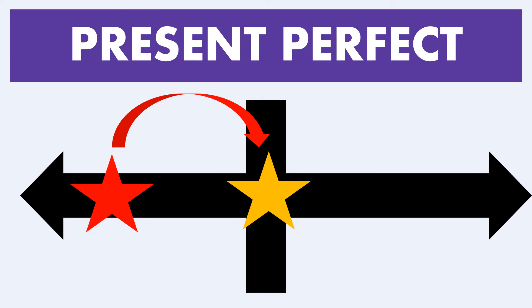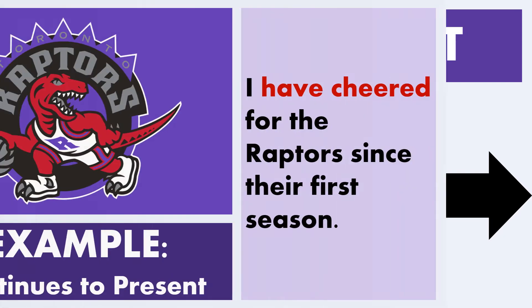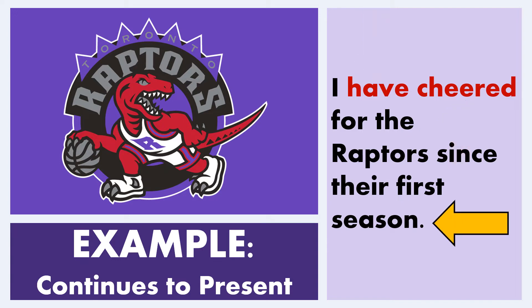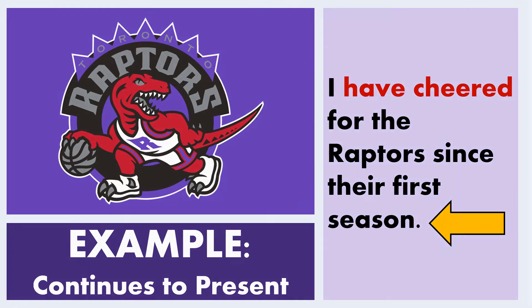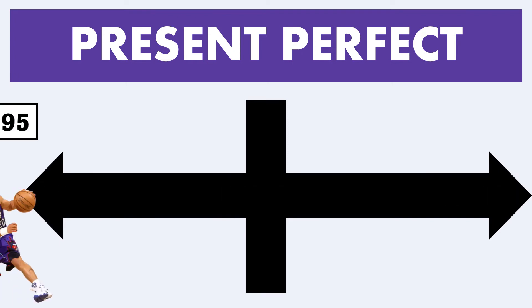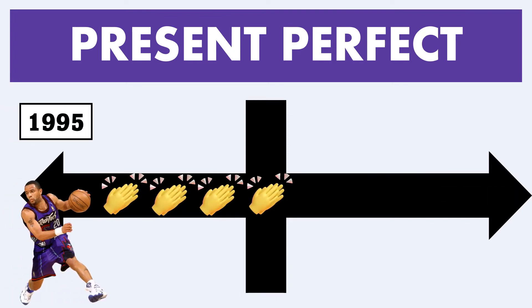Let's look at both of these in practice. 'I have cheered for the Raptors since their first season.' Here we have the word 'have' paired with a simple past tense verb, with context added — 'since their first season.' On our timeline: the Raptors came into being in 1995, and since that time, I have been cheering for them. This illustrates the present perfect continuing from the past to the present.